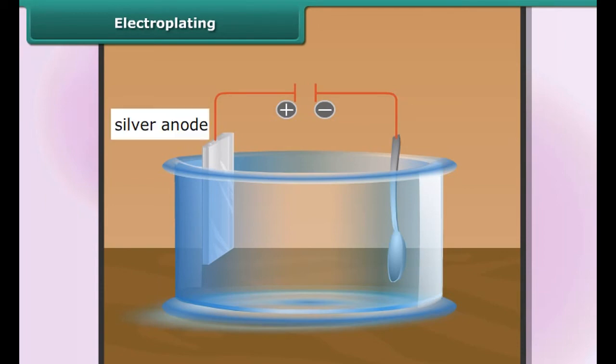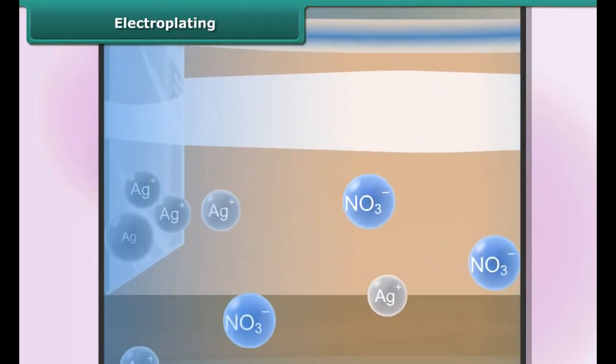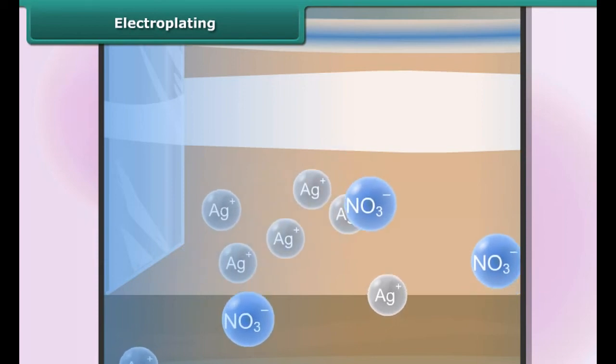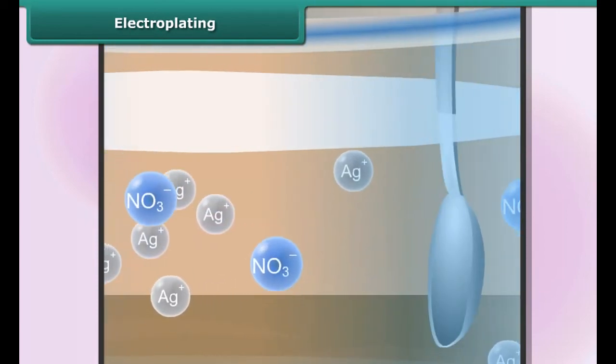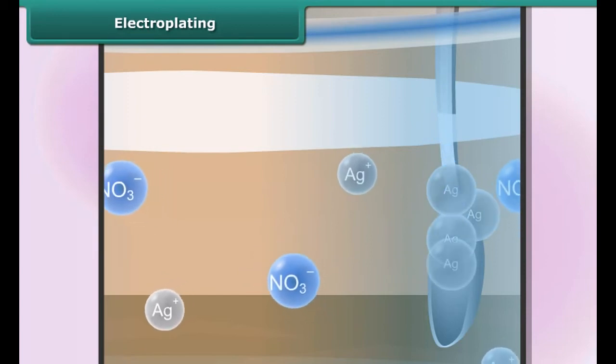Electroplating: It is common practice to coat articles made of cheap metals such as iron or steel with a thin layer of less reactive metal. A steel object, for example a spoon, is connected to the negative terminal of the current source. The positive terminal is connected to a bar of the metal, for example pure silver. Thus the spoon acts as the cathode in the electrolysis while the bar of metal acts as the anode. The electrolyte is a solution of salt that contains the ion of the anode metal, for example silver nitrate.